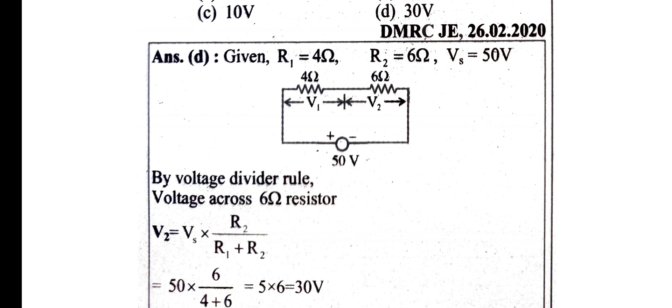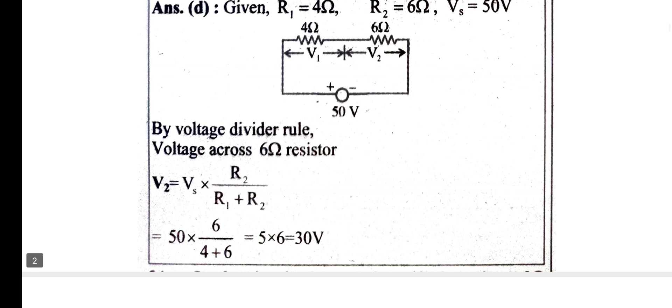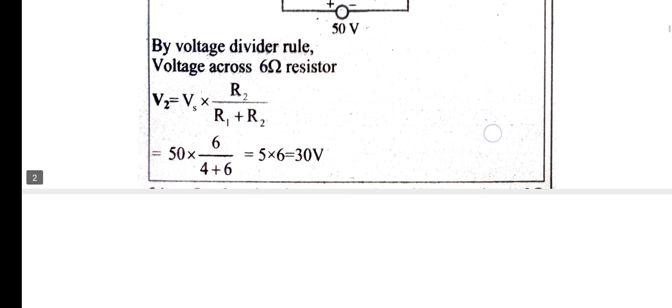Voltage divider rule — you can learn the theory. V2 equals supply voltage Vs into R2 divided by total resistance. V2 is across the resistance divided by total resistance. The answer is 30 ohm.